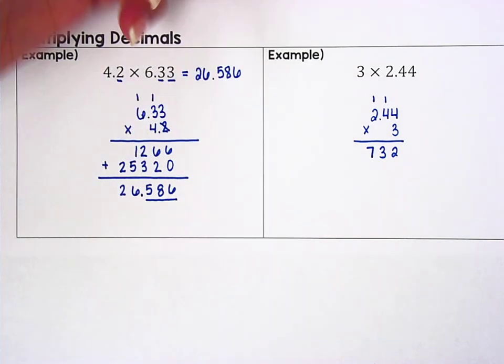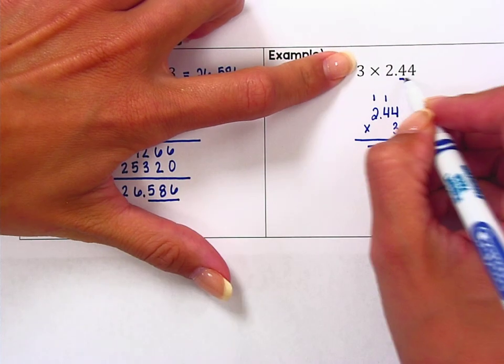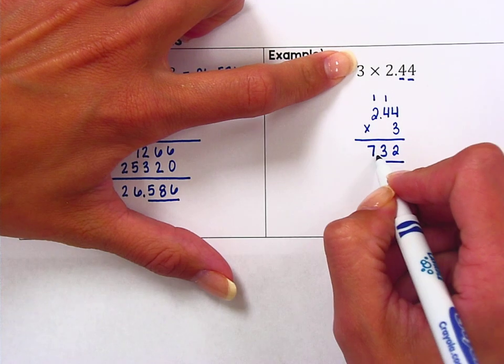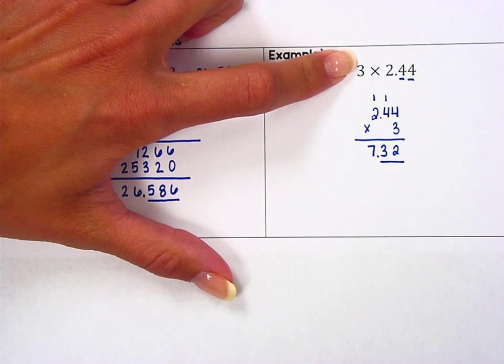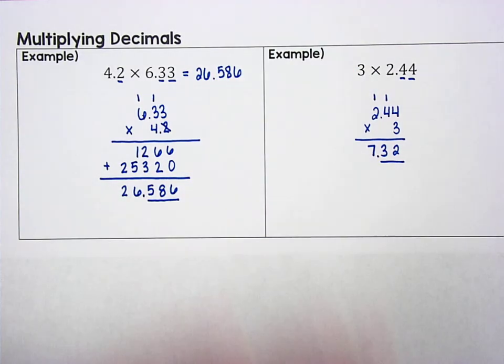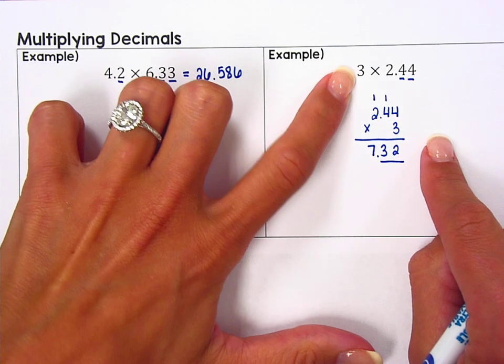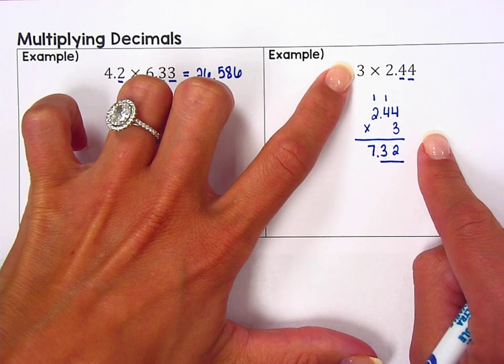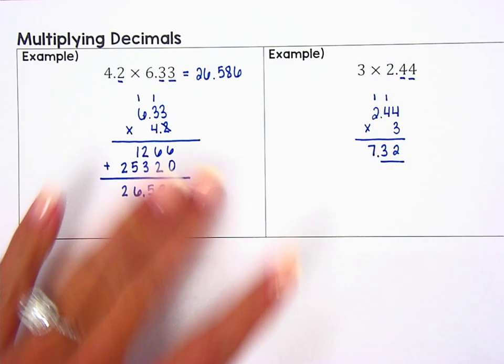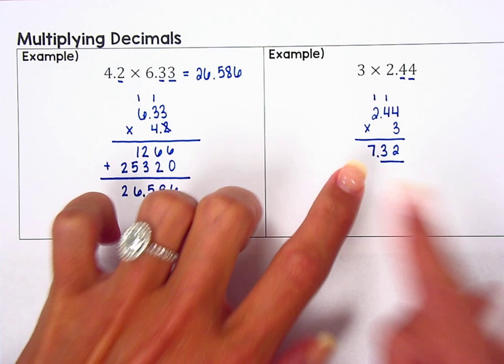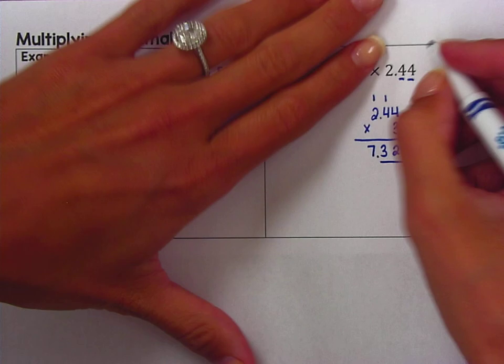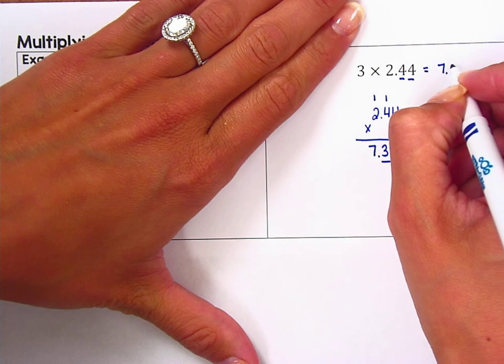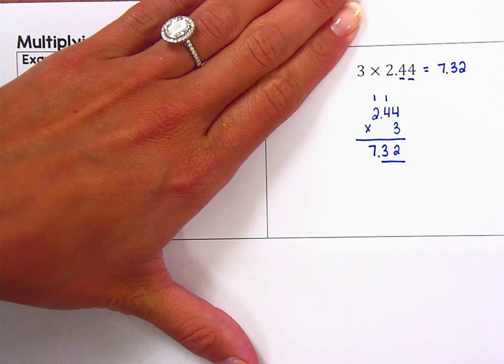Now we can go through and use our strategies. Since in our original problem there are only two numbers after the decimal point, in our answer there should be two numbers after the decimal point. Now we can use estimation to check this. So 3 is obviously 3. 2.44 is about 2. So 3 times about 2 should be about 6. And we know that 7.32 is close to 6, so we know our decimal point is in the right place. So 3 times 2.44 is 7.32.